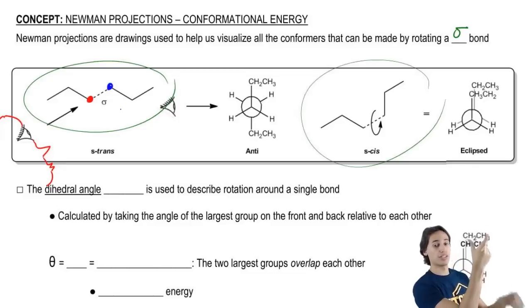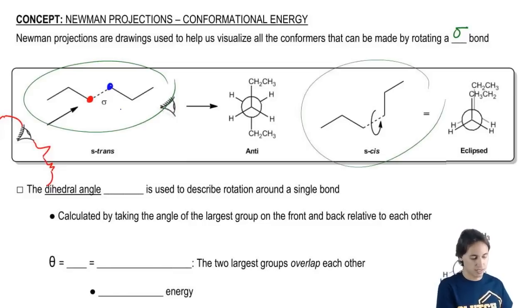You'd see one. If you're looking right down that bond, you'd see one in the front, one in the back. So you would see that this would be your front one. And then the one in the back would be represented by that circle.